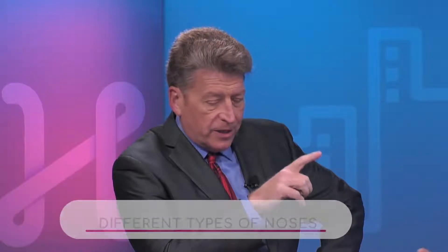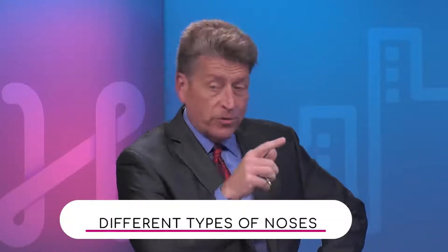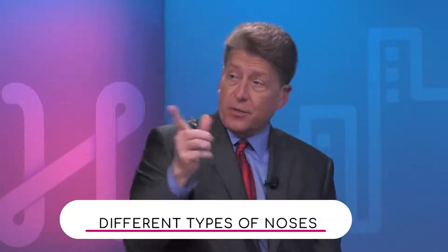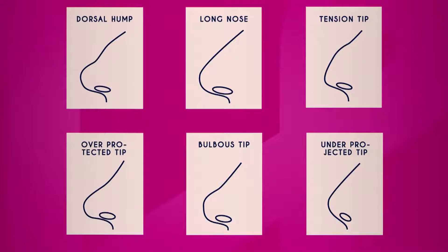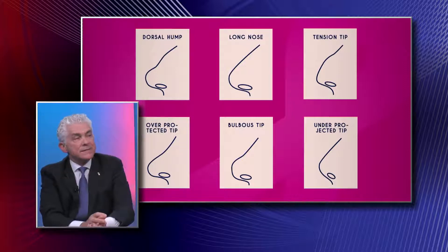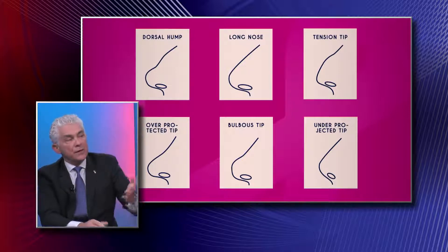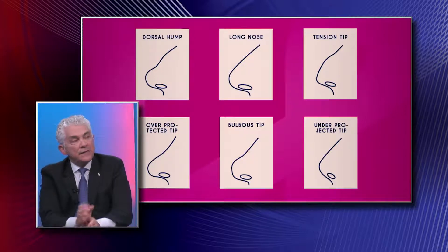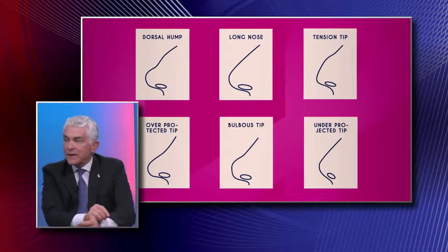Let's go through the different shapes of noses and how rhinoplasty alters them. The dorsal hump is basically a bump that you have to take down. These are different types of noses that facial plastic and plastic surgeons have identified, each requiring a different technique.